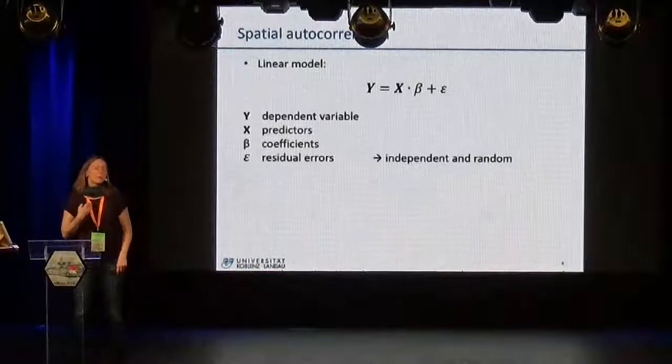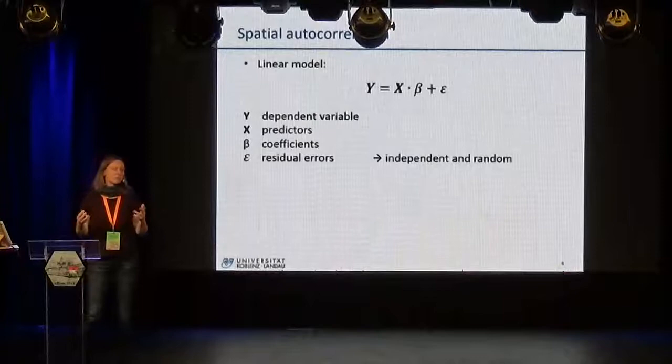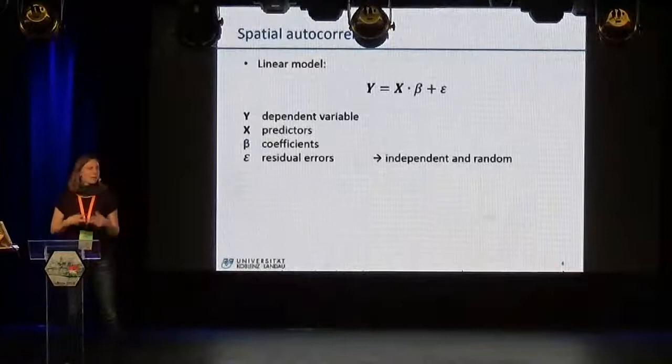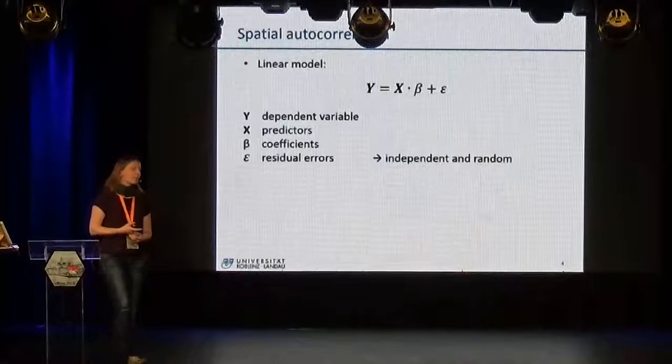Some basics: typically, even when working with spatial data, we forget that the data are spatial and we just do a linear model or whatever — we have a dependent variable like concentration or presence-absence data of a certain species, we have some predictors or covariates, we estimate the beta coefficients, and there's a residual error involved. This error has a distribution depending on the data, but what we always assume is that this error is independent and random.